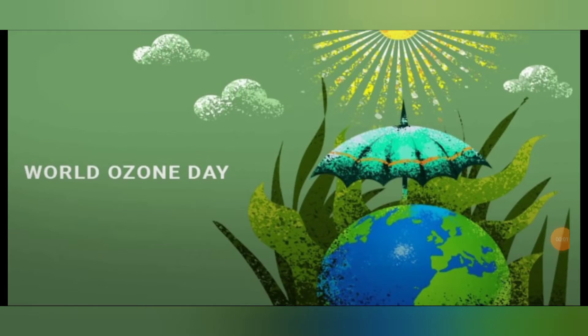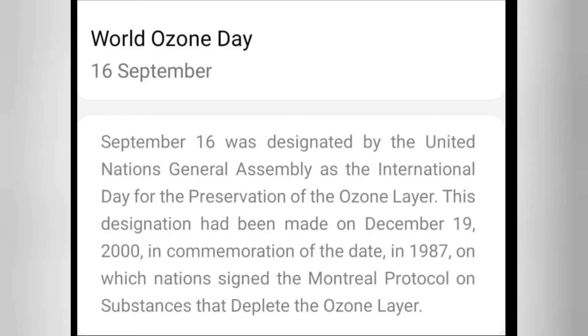Look at this picture. It looks like earth is protected by an umbrella. That umbrella signifies the ozone layer — just as an umbrella protects us from the scorching sun, ozone also protects all the species on earth from the harmful radiations of the sun. So we need to preserve the ozone layer.